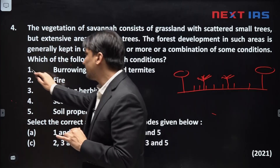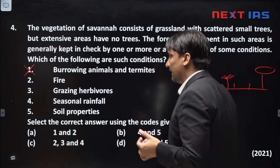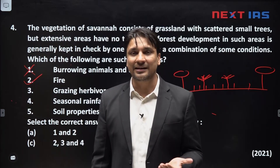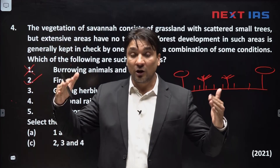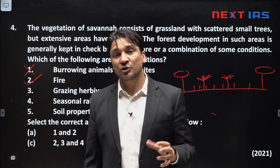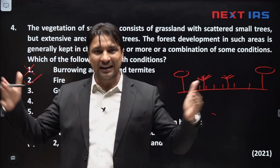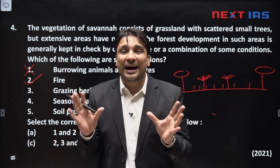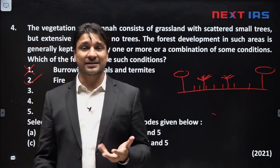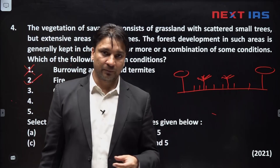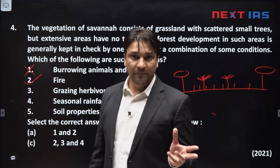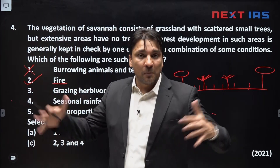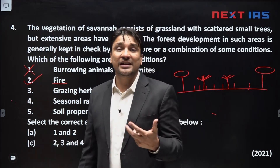By making the soil fertile, burrowing animals and termites actually support the growth of trees; they do not hinder it. So this statement is incorrect. The second factor is fire — this is definitely correct. In the savannah region, there are long dry seasons and a short rainy season. During the long dry season there is a risk of wildfires, and bush fires frequently happen in these areas, controlling the growth of trees.